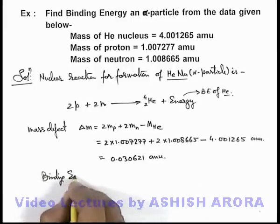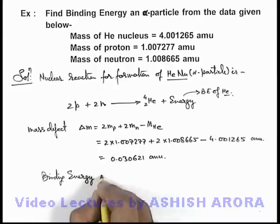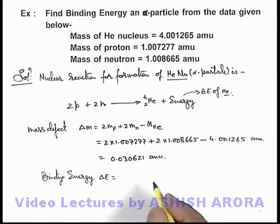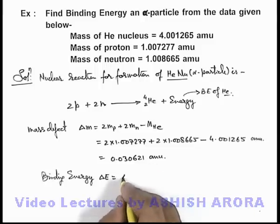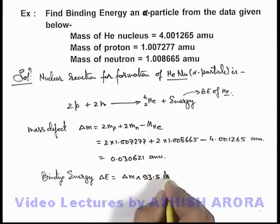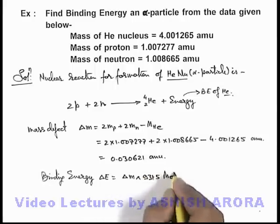Binding energy of this nucleus, ΔE, by using the conversion factor of mass defect in amu to million electron volt, so this will be Δm multiplied by 931.5 MeV.